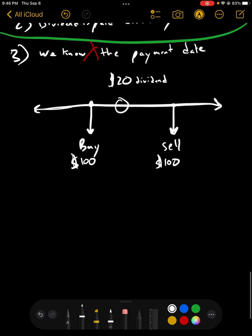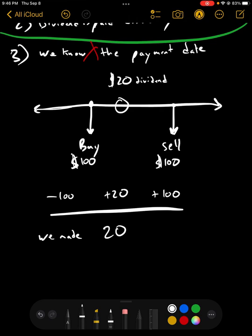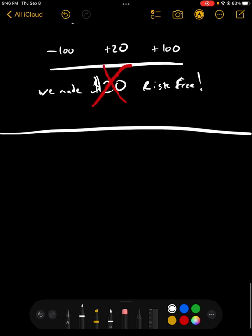So, let's look at our cash flows. First, we had a negative $100 cash flow. Then, we had a positive $20 cash flow. So, add that up and we made $20 risk-free. Which, of course, is nonsense. You can't do that. So, what's keeping people from doing this and creating this kind of arbitrage? So, let's set up that timeline again. And we know that at the middle, we're getting a $20 dividend.